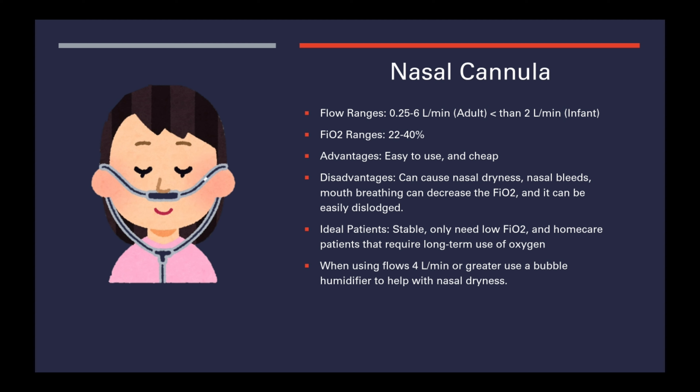The first device is the nasal cannula. Flow ranges are a quarter of a liter per minute to six liters per minute in adults, and less than two liters per minute for infants. FiO2 ranges are 22 to 40 percent. Advantages: it's easy to use and cheap. Disadvantages: it can cause nasal dryness, nasal bleeds, mouth breathing can decrease the FiO2, and it can be easily dislodged by patients.